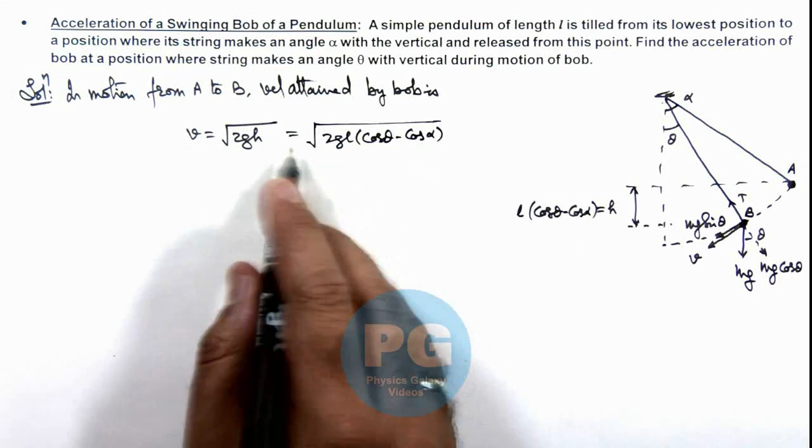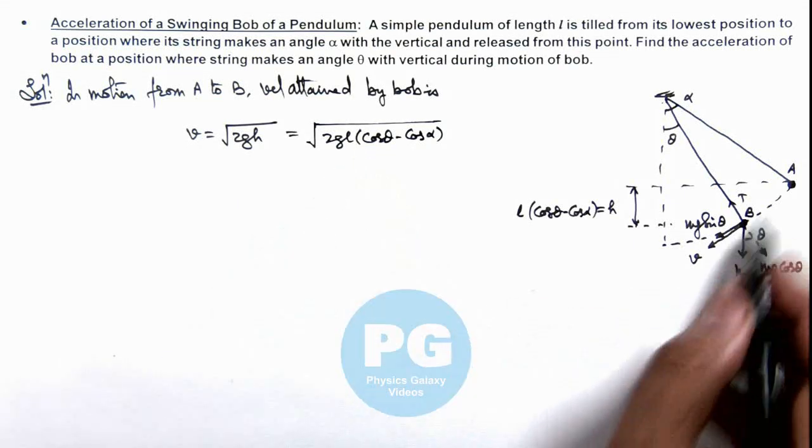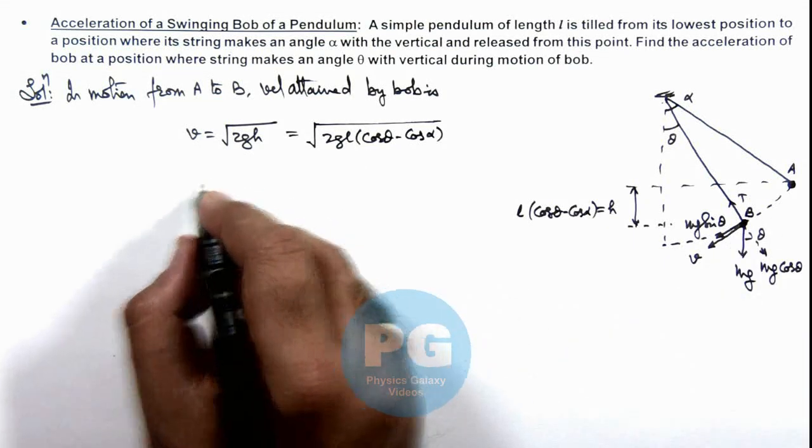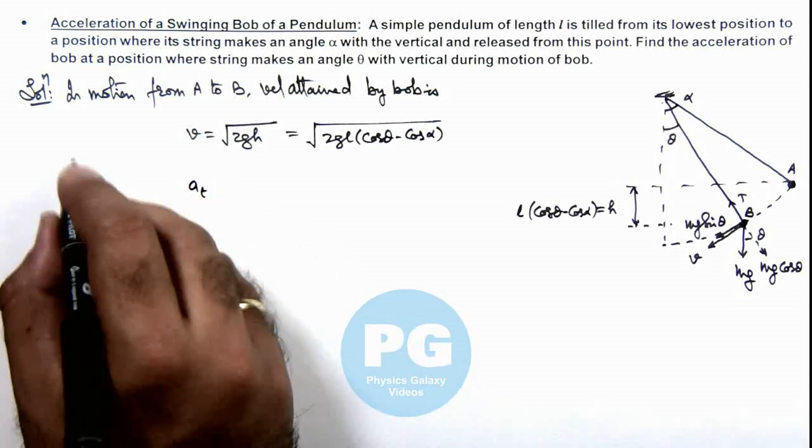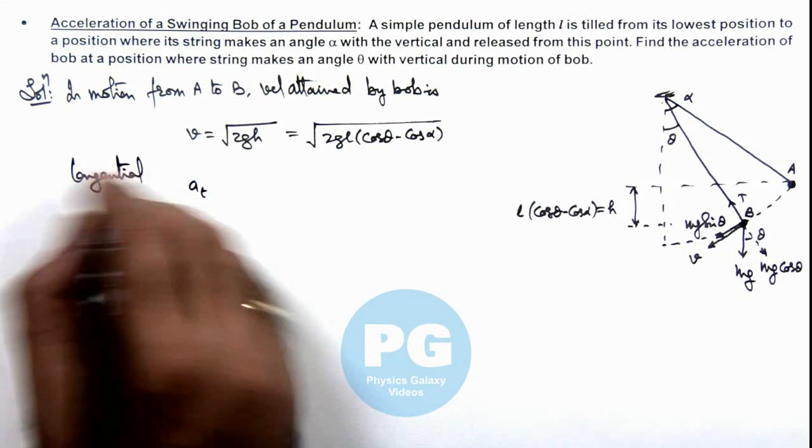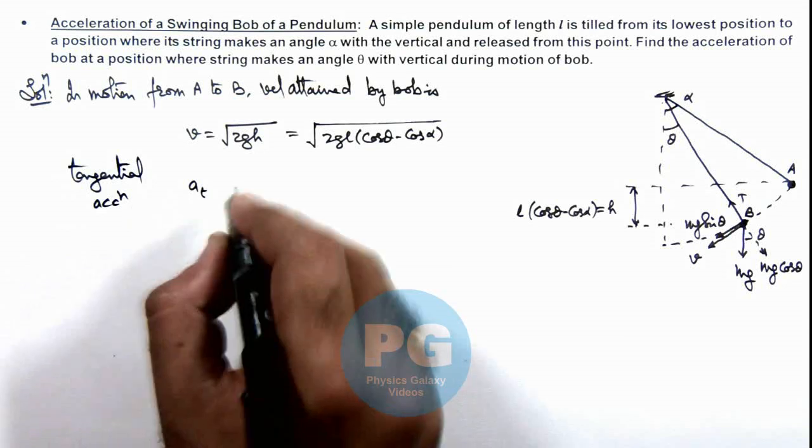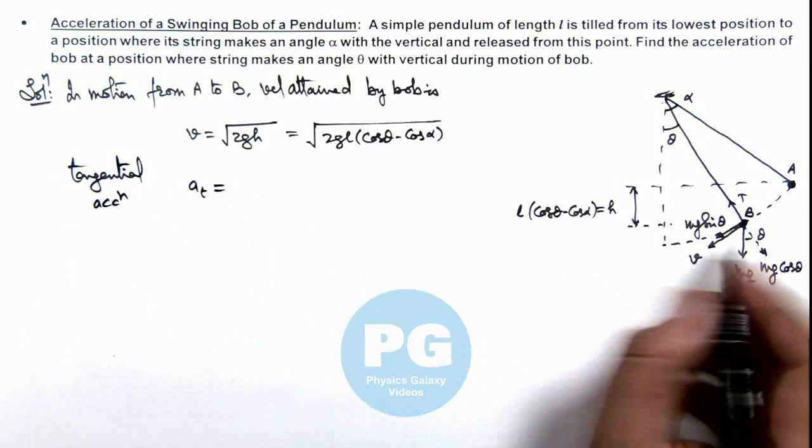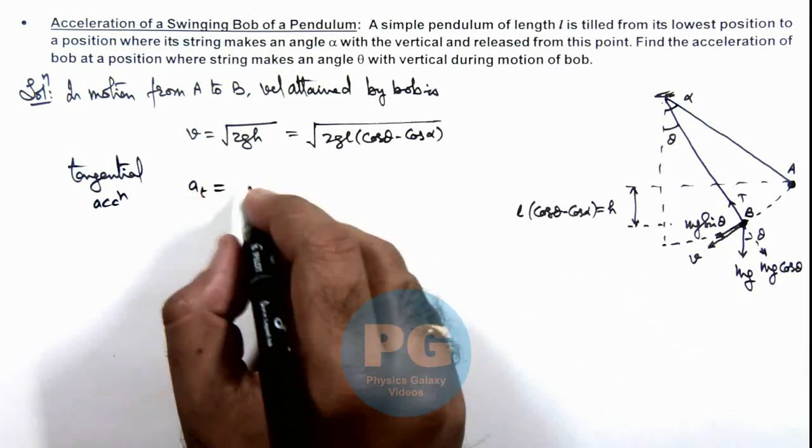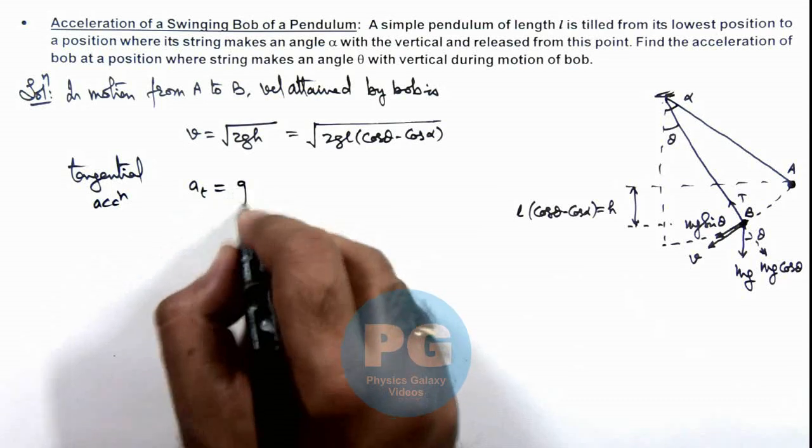Now if we calculate the tangential acceleration of the bob, then tangential acceleration can be given as aₜ equals g sin theta, as this is only due to mg sin theta. So this can be written as g sin theta.